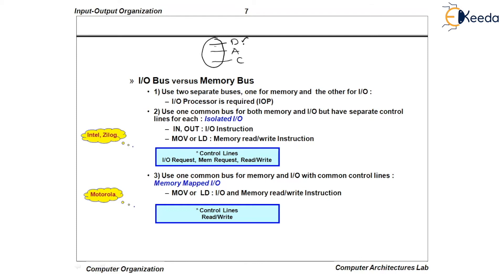The data bus is to which the data element will get transferred. The address bus is to which an address will get transferred, and that address will get located either in the main memory or in the interface registers. And finally, there is a control line, because various control commands can be sent on this control line to specify one specific control command for a specific transfer. In order to design a bus system, the first approach by a designer is to design two separate bus systems — one for memory and one for IO devices.